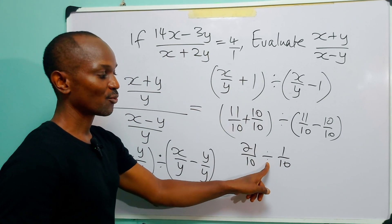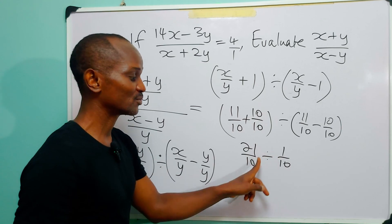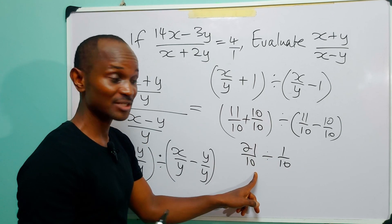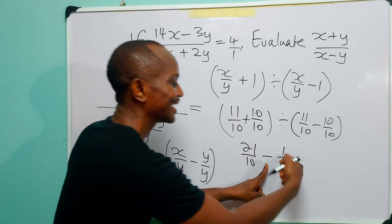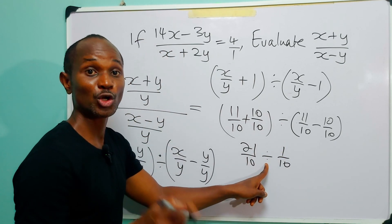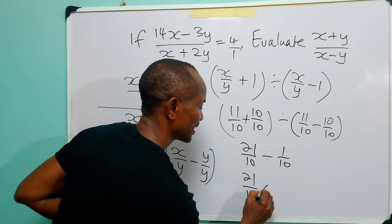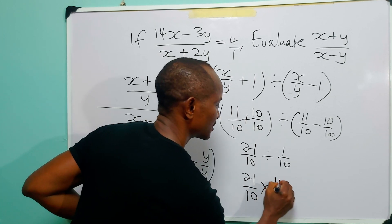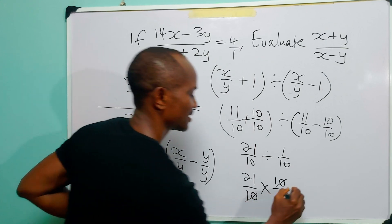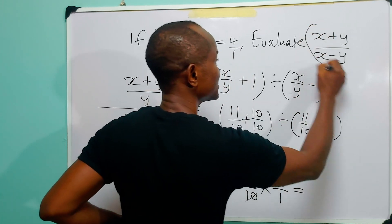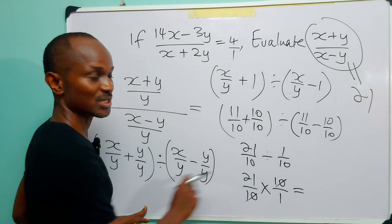Now you remember that when you do fraction division, when you divide with a fraction, what you simply do is replace this division sign with multiplication and then flip the dividing fraction upside down. So that is, we have 21/10 times 10/1. This cancels that, and you have that this quantity is equal to 21.